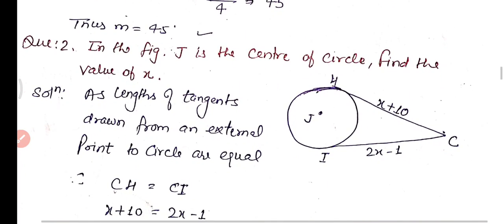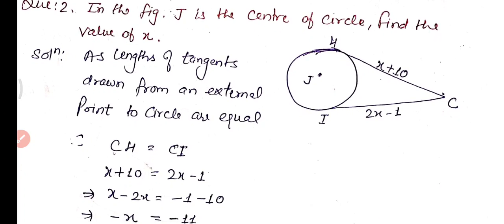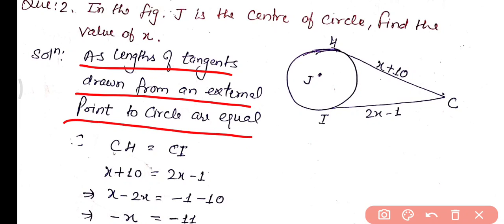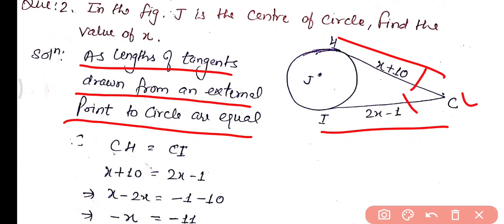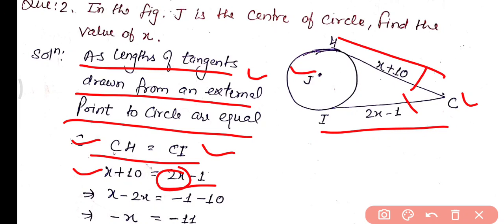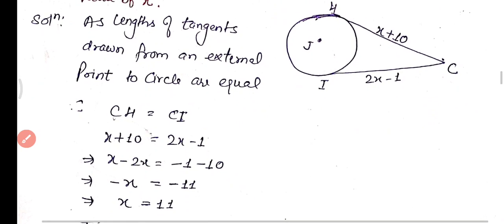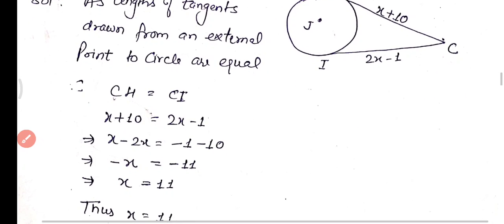Question two: J is the center of the circle, find the value of x. Since the lengths of tangents drawn from an external point to the circle are equal, CH equals CI. CH equals x + 10 and CI equals 2x minus 1. Transposing: x minus 2x = minus 1 minus 10, so minus x = minus 11, giving x = 11.